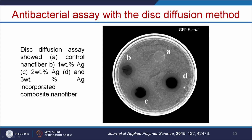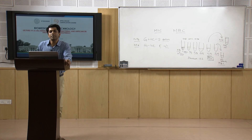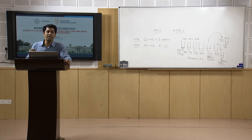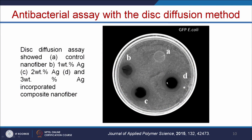The next method is the disc diffusion antibacterial assay. A lawn of bacteria is spread on a plate using the spread plate method. Uniform-size nanofiber discs—or sterile Whatman paper discs dipped in nanoparticle solution—are placed on top of the bacterial lawn and incubated overnight. After incubation, a clear zone of inhibition is visible, indicating that the nanofiber or nanoparticle-loaded disc is inhibiting bacterial growth. By measuring the length of the zone of inhibition, we can calculate the antibacterial efficiency.